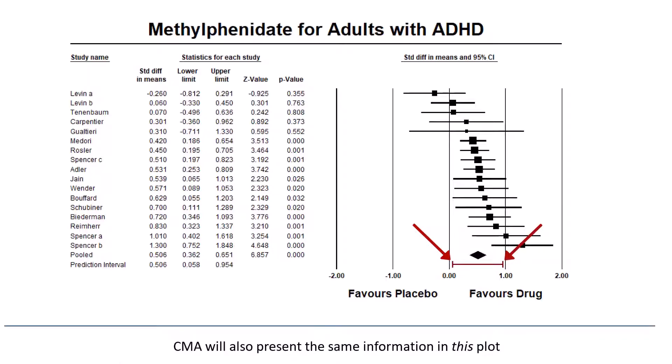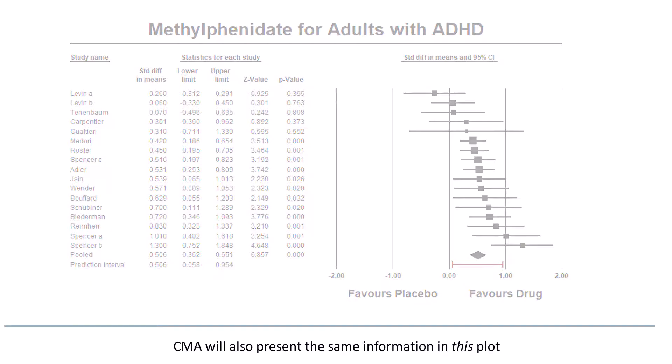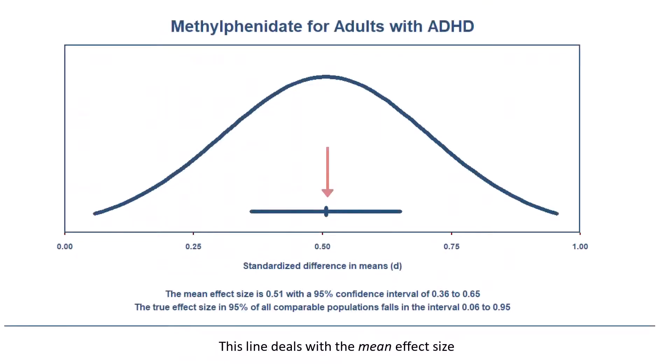CMA will also present the same information in this plot. This line deals with the mean effect size. The mean is estimated to be here, but the true mean could fall anywhere from here to here. This line deals with the dispersion in effects. The mean is here, but in any single population, the effect size could fall some distance from the mean. At one extreme, there are some populations where the effect size will be as low as 0.06.